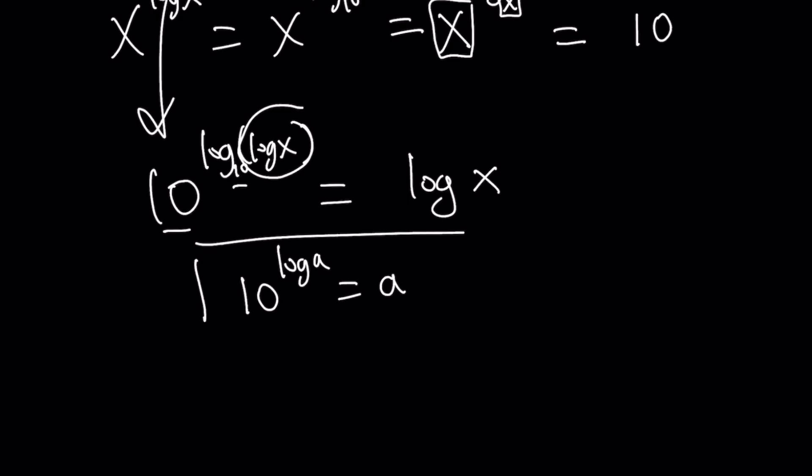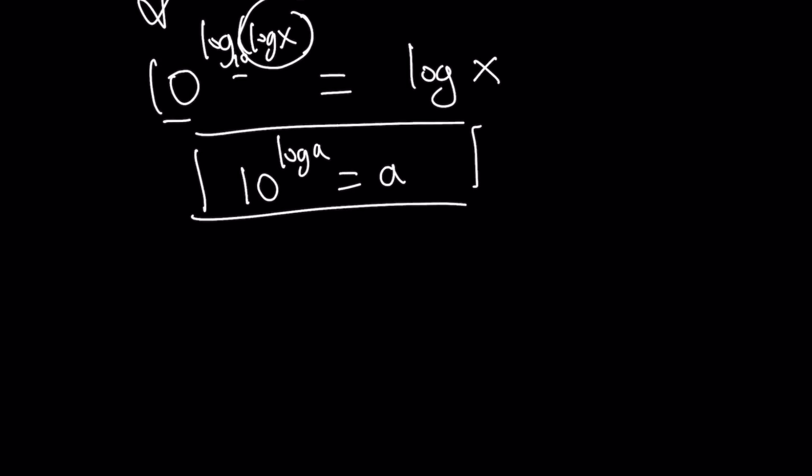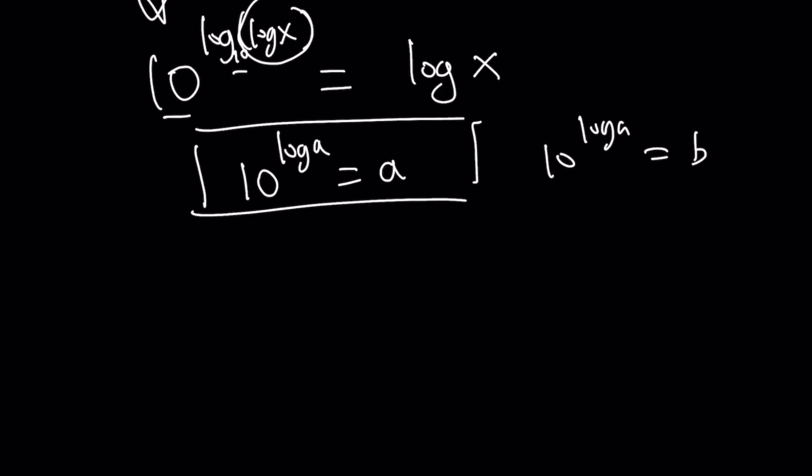the rule is 10 to the power log a equals a. Make sense? Now, if you want to find out why this is true, you can call 10 to the power log a, b, and then log both sides. You're going to get log a equals log b, which means b equals a. Make sense? Easy.